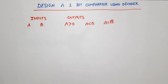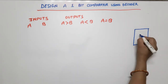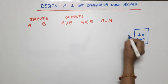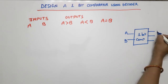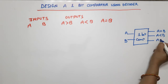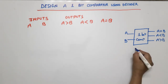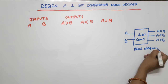First we will draw a block diagram. This is the one-bit comparator, which has two inputs A and B and three outputs: A equal to B, A less than B, and A greater than B. We have to make the same block diagram using a decoder — this is the block diagram.